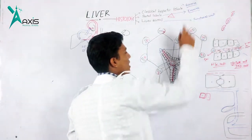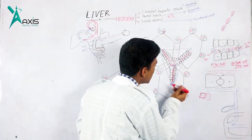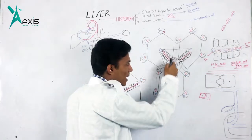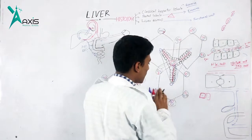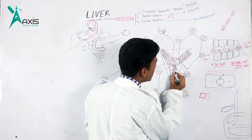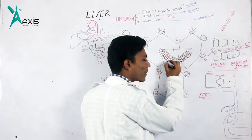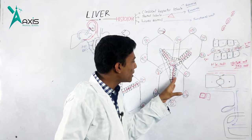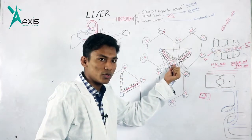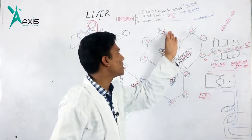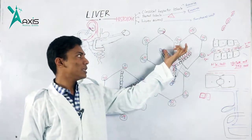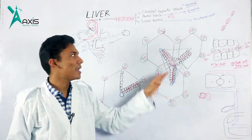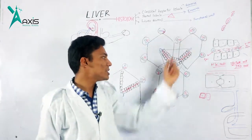The portal lobule is related to the exocrine function. The exocrine function involves the hepatocytes secreting bile into the bile ductules. The bile ductules are the focus of bile drainage. The portal lobule, centered on the portal triad and connecting three adjacent classical hepatic lobules, emphasizes bile drainage as its exocrine function.